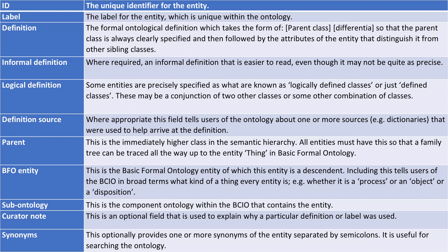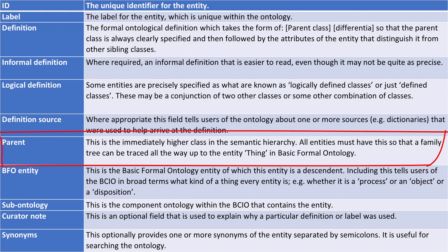A very important field within the spreadsheet is the parent field. This is the immediately higher class in the semantic hierarchy. This is very important because in the BCIO, we always aim to trace the hierarchy all the way up to the absolute most general thing that exists in the world, which is called 'thing' in Basic Formal Ontology — the high-level ontology which we link to, and everything links to.